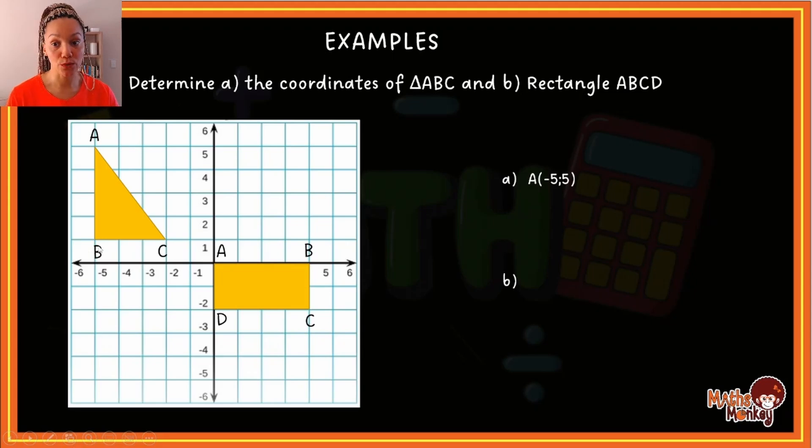Then we go to B. B again, x-axis -5, y-axis 1. And that is what my coordinate is for B. Then for C, again, I go down to the x-axis, it's -2. And the y-axis it's 1. And that is the coordinates for triangle ABC.